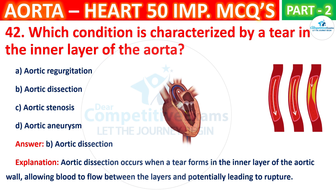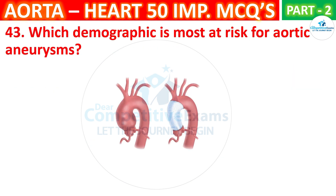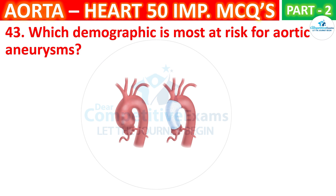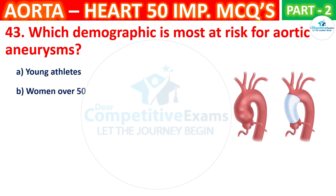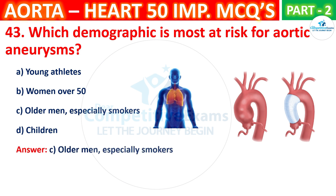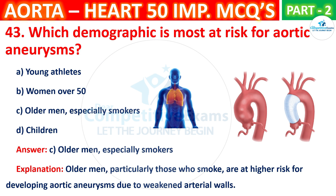Question No. 43. Which demographic is most at risk for aortic aneurysms? The options are: Young athletes, Women over 50, Older men especially smokers, or Children. The correct answer is C, that is older men especially smokers. Older men, particularly those who smoke, are at higher risk for developing aortic aneurysms due to weakened arterial walls.